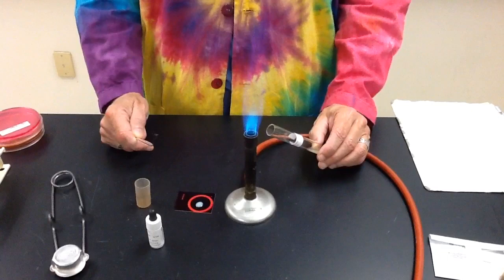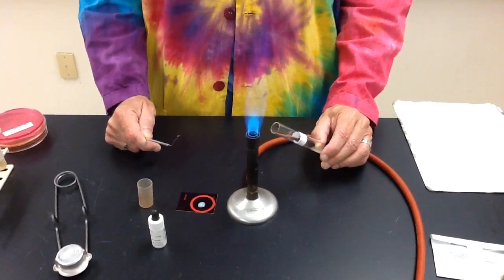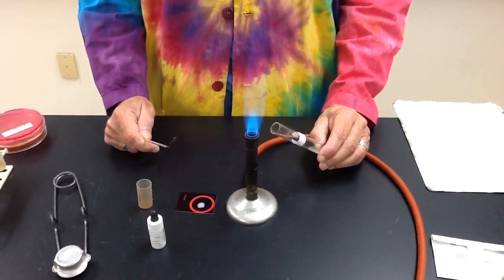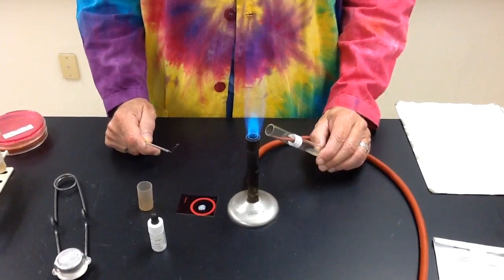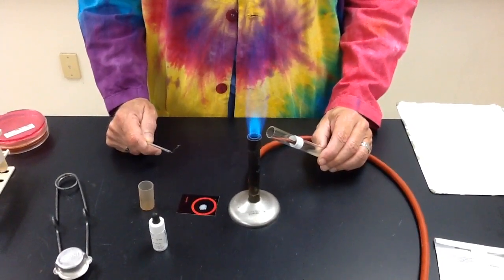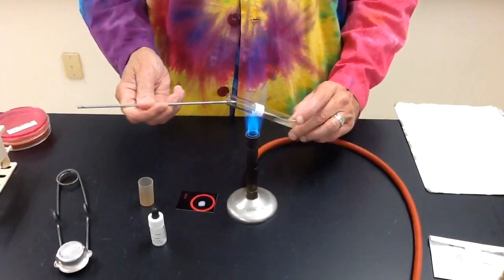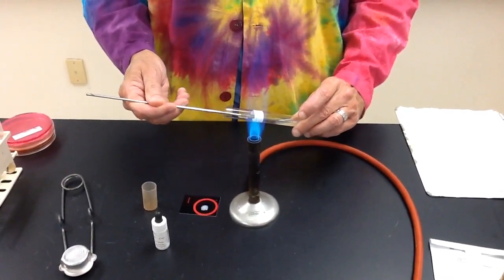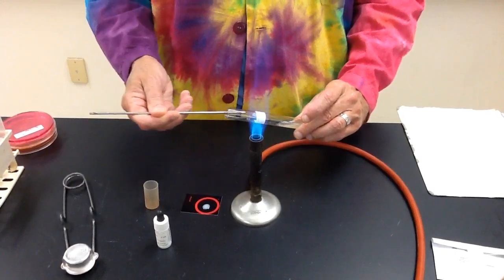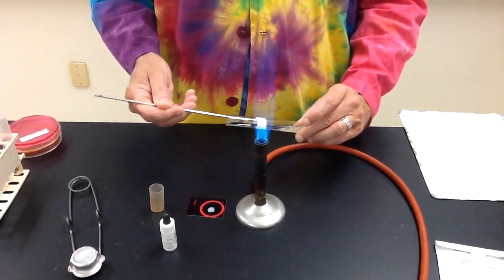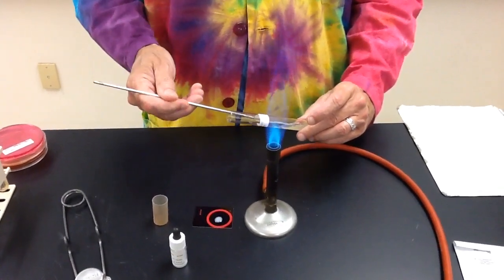And again, make sure that your loop cools off before you stick it in the bacteria, because you don't want to break it down and kill it. So, you just want to scrape out a little bit of the bacteria. Make sure you get some on your loop.